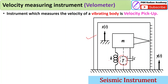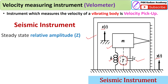Here you can see the construction of the seismic instrument. K is the spring, the dashpot is there, and the pointer is on the scale. The total body is attached on the vibrating body. When the vibrating body vibrates, this instrument vibrates along with it, and the seismic instrument pointer displacement will be x.